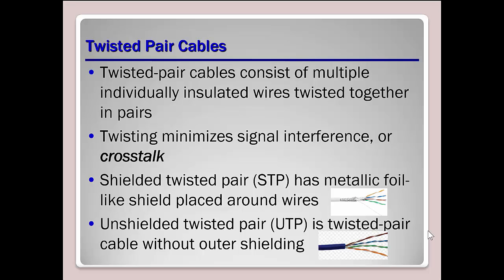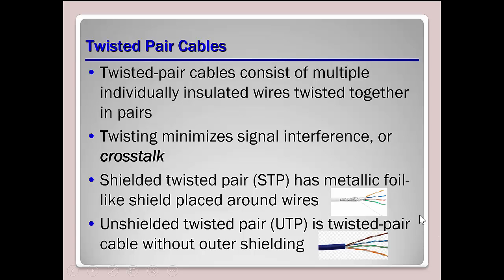There are two types: shielded twisted pair, which provides a shield that protects the signal in the cables, and unshielded twisted pair. Unshielded twisted pair is what we commonly work with today — if you're building cables or grabbing one to go from your switch to your computer, that's most likely what you'll pick up. It's cheaper than other types of cabling because there's no shielding.